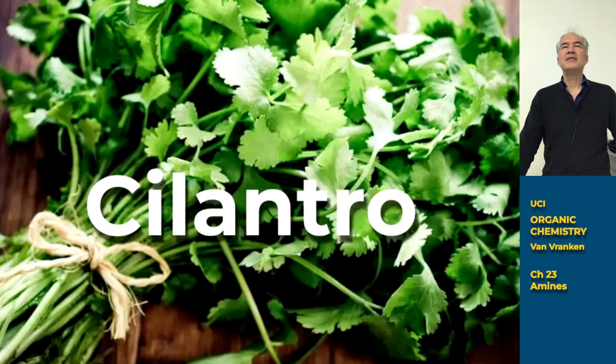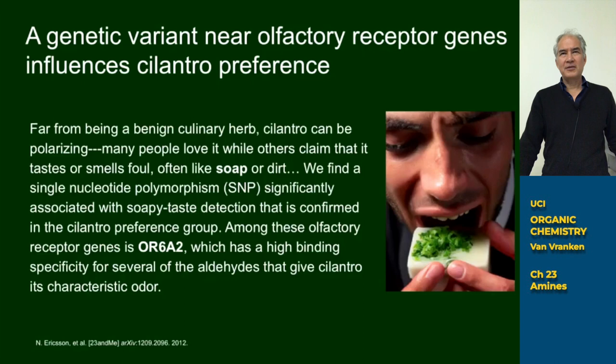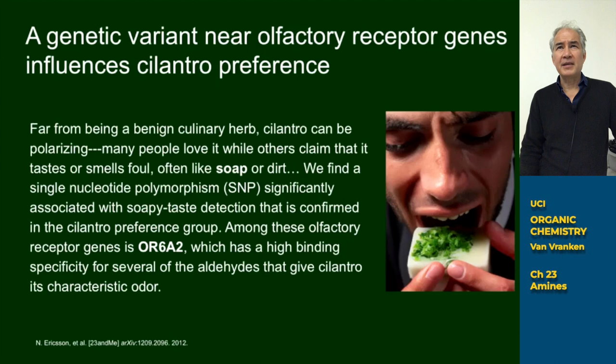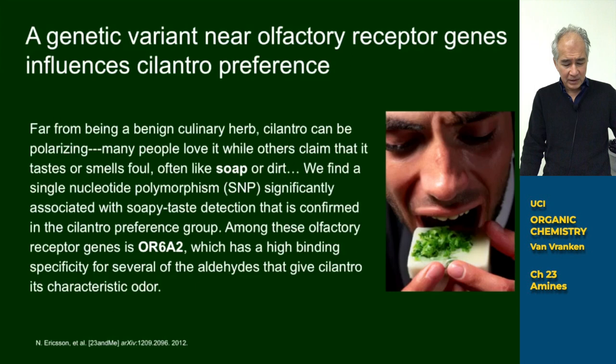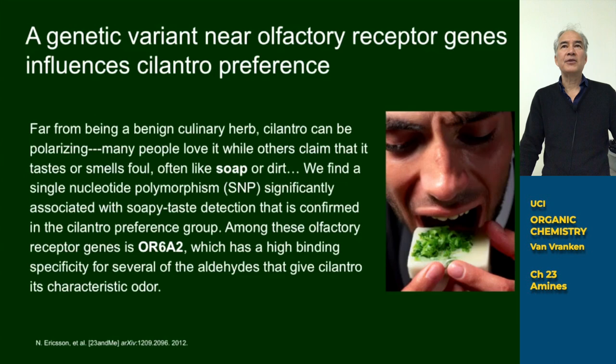Clearly there's a chemical basis to that if people are having these differing opinions about the flavor of cilantro. Some important work started to come out around 2005, and then there was a paper published by the people at the genetics screening company 23andMe, who analyzed the genes of thousands of volunteers. What they found is they were able to trace bad taste — people who felt that the taste of cilantro was soapy — to a very particular single nucleotide polymorphism in a gene OR6A2.